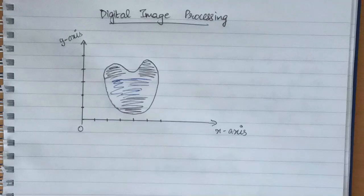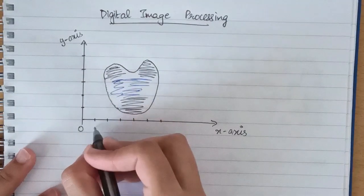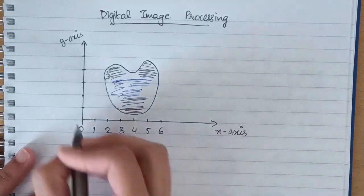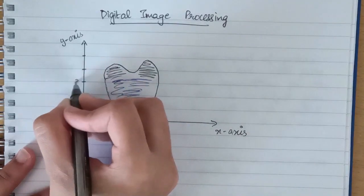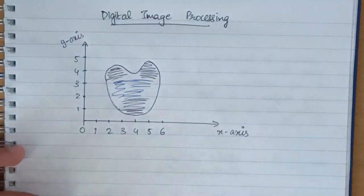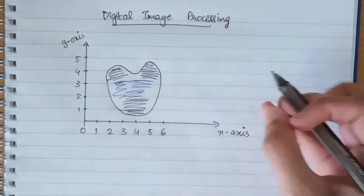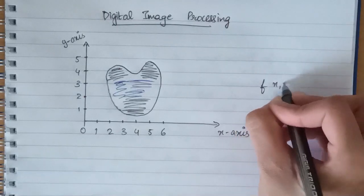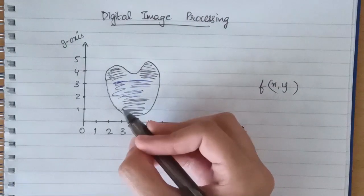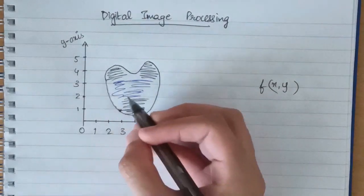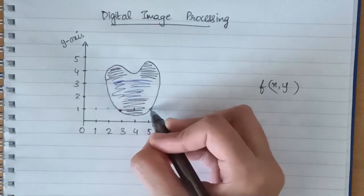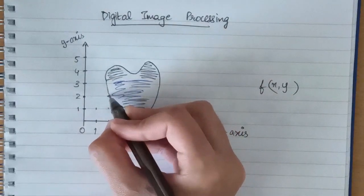Let's also write down the numbers here. Now I'm saying that this image can be represented as a function of x and y. How is that? If we look at these points, then each of these points have certain intensity.